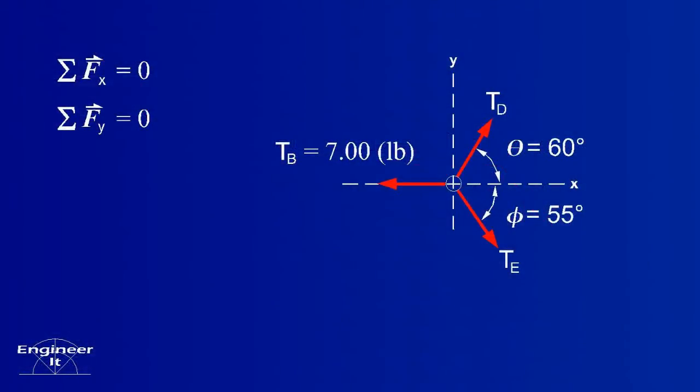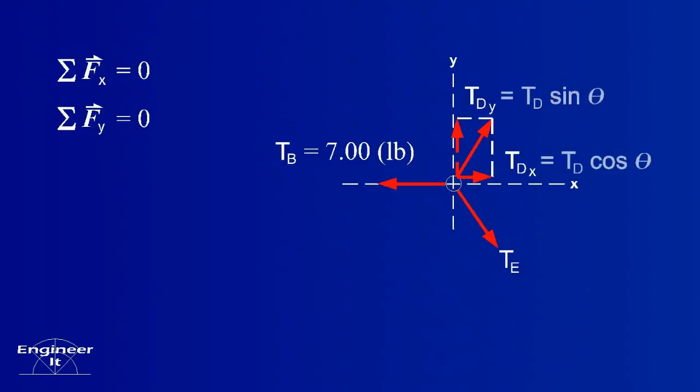For tension D draw the X and Y components of the force just like before. Using trig, write the equations relating the X and Y components to the tension D. Remember, the components of the force replace the tension vector without changing the overall reaction. Do the same for tension E.